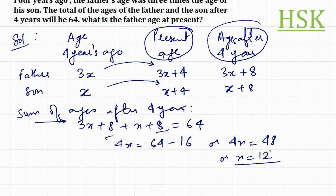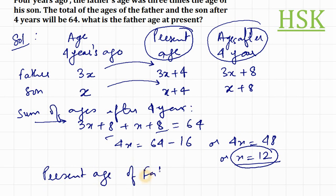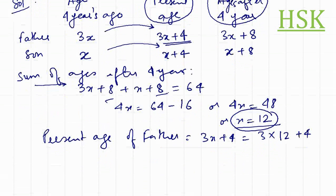Since x is equal to 12, the present age of the father would be 3x plus 4, that is 3 into 12 plus 4, which is 36 plus 4, that is 40 years. So this is the required answer.